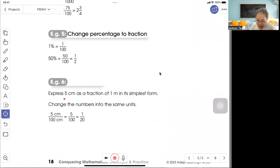Example 6: Express 5 cm as a fraction of 1 meter in simplest form. Take note, when you want to express, you must always bring to the same unit. That means 1 meter has to change to 100 cm, then you express 5 out of 100. Simplest form is 1 out of 20.